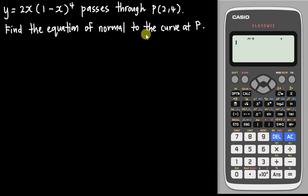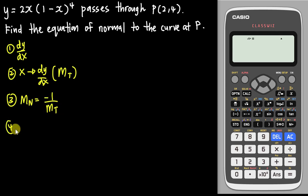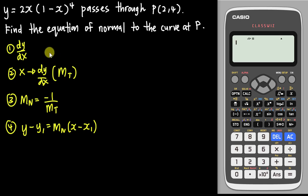To solve this kind of question you need to know how to find the equation of normal. I give my students four steps: first, find dy/dx; second, substitute the x value into dy/dx to get the gradient of the tangent; third, find the gradient of normal using negative one over gradient of tangent; fourth, form the straight line equation y minus y1 equals gradient of normal times x minus x1. Follow these four steps and you can easily get five to six marks.